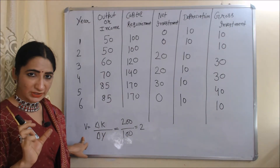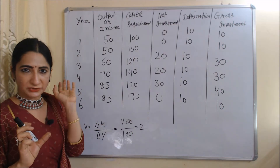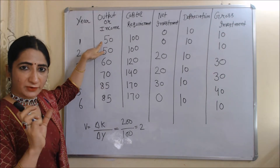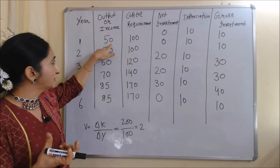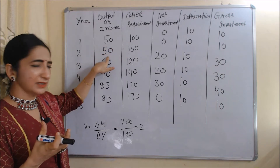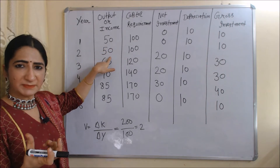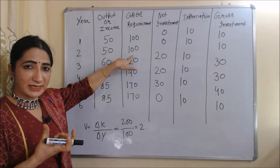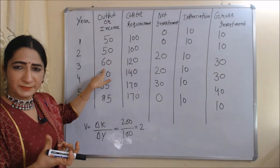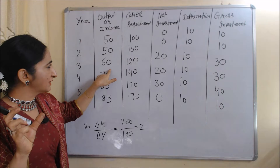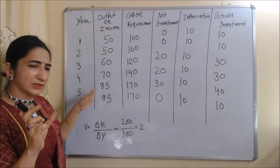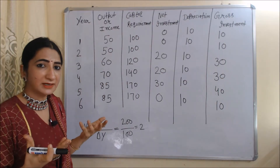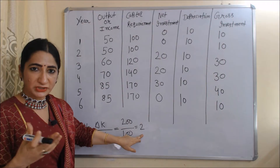In the first period, output is 50, so capital required is 50 × 2 = 100. In the second period, output is still 50, so capital requirement is also 100. In the third period, output is 60, so 60 × 2 = 120. Similarly, you can calculate other values. The key point is that for a particular amount of output, we require double the capital because our capital-output ratio, or accelerator value, is equal to 2.